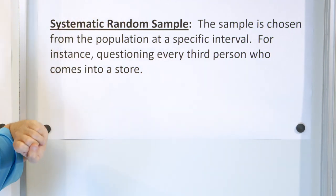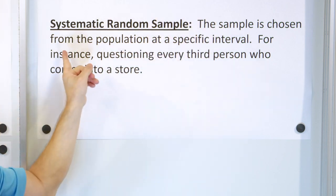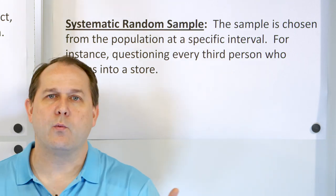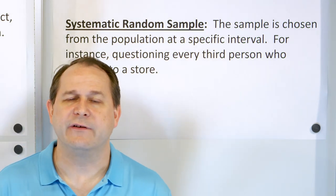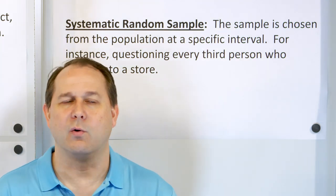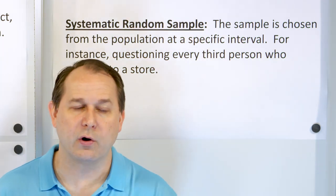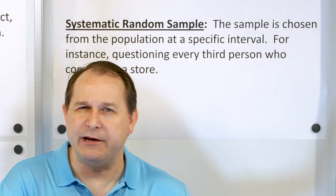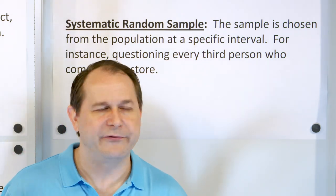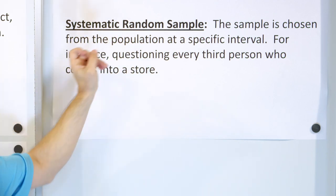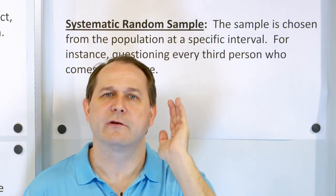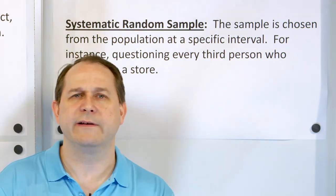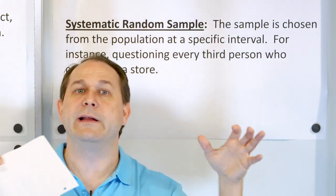The third type is a systematic random sample. This sample is chosen from the population at a specific interval — for instance, questioning every third person who comes into a store. This is the kind of sampling done during exit polls at elections, asking every fifth or sixth person. It's not a simple random sample and not stratified, but it is systematic — every third, every fourth — and as long as you're consistently taking every third one, you're randomizing because you're not only asking boys or girls or one age group. You're catching the randomness by assuming every third person leads to a random sample.